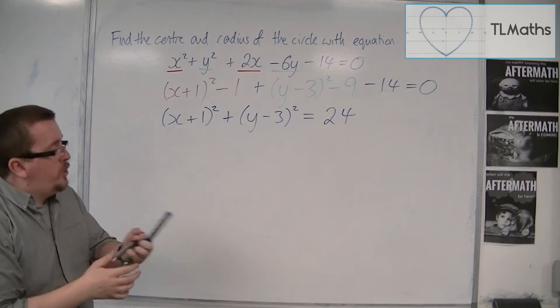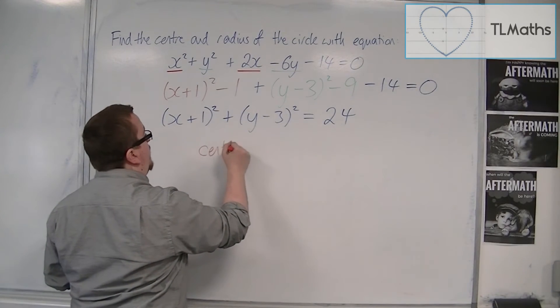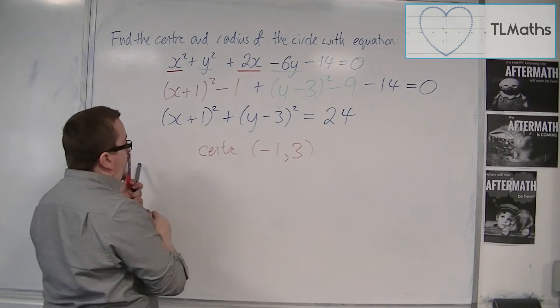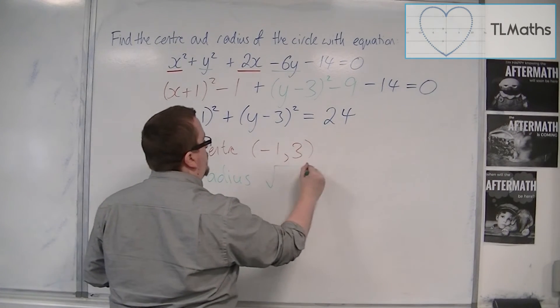Leaves me with this equation here, from which I can then identify the center as minus 1, 3, and the radius as root 24.